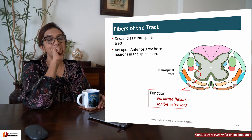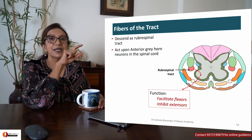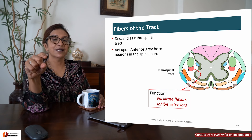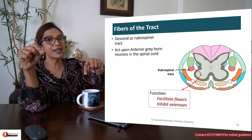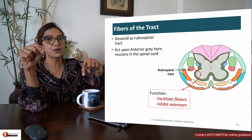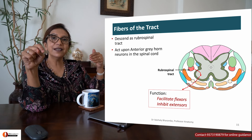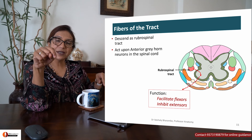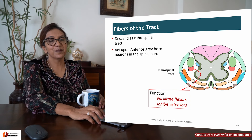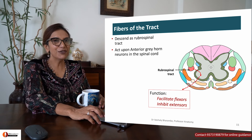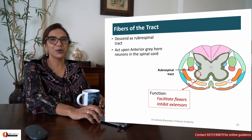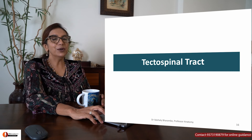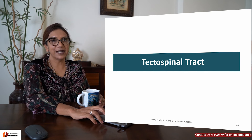So: rubrospinal — facilitatory to flexors, inhibitory to extensors. Now we go to the next tract: tectospinal. Think for a minute — if there is a sudden sound or a sudden light, will you turn towards it? Usually, if you're in the dark and there's a sudden light, you automatically turn towards it. That's your tectospinal tract.